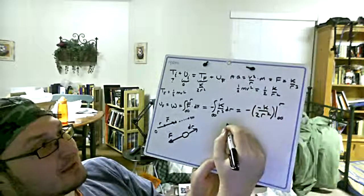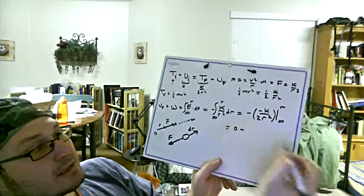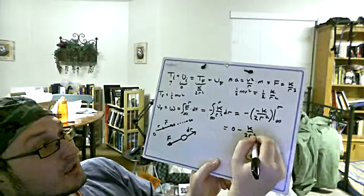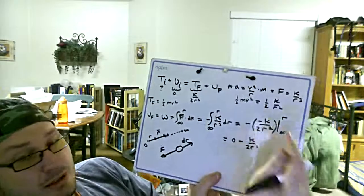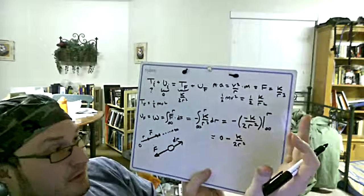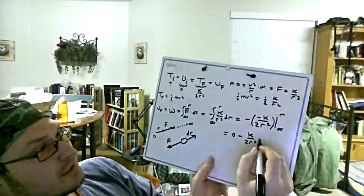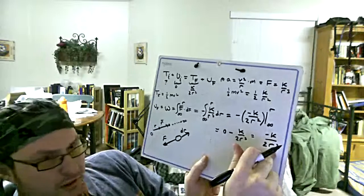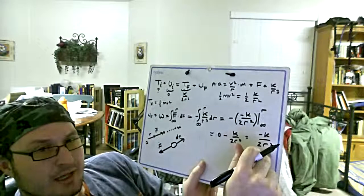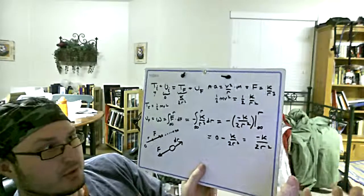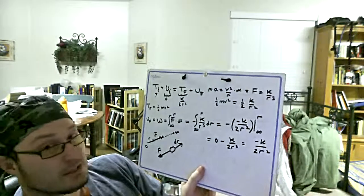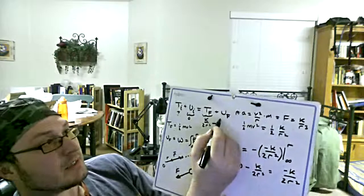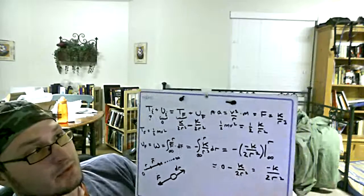And we're going to evaluate that between infinity and our distance r. So then we plug in the infinity. We get a zero minus, there we go, another negative sign. That's the third one. And then these two are going to cancel. So we get minus k over 2 r squared. And I realize this is sloppy to say r equals r and plug in the r. I should have changed the variables there. But that's going to give us our term negative k over 2 r squared. So we get a negative out of that. And hopefully you're comfortable with that as the potential energy.